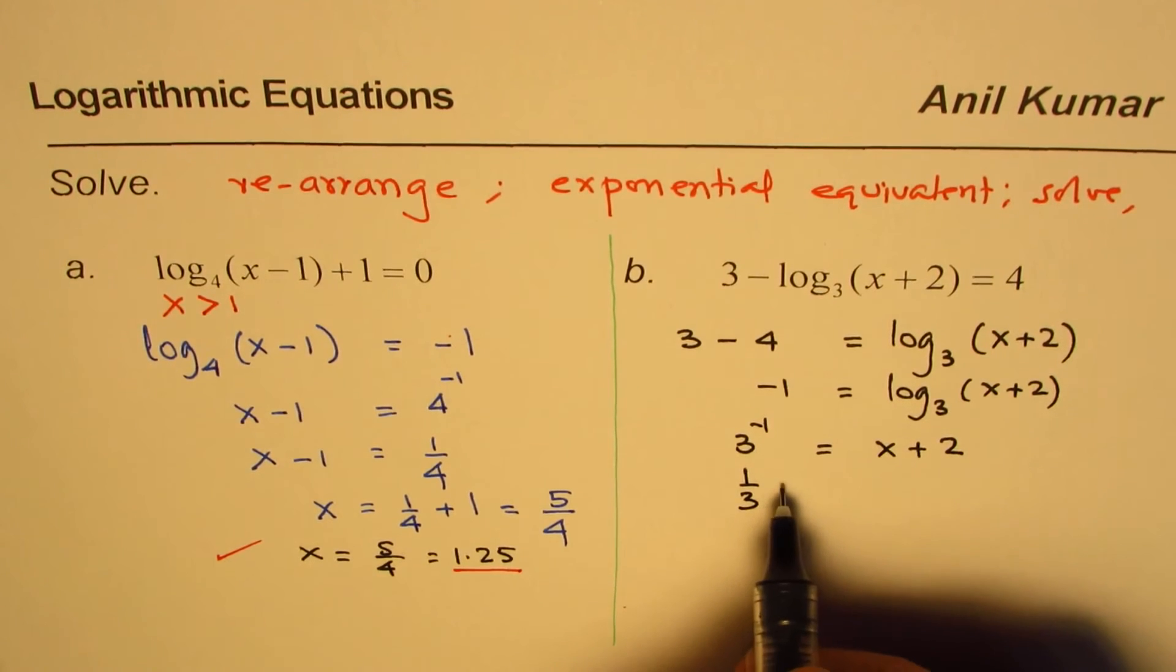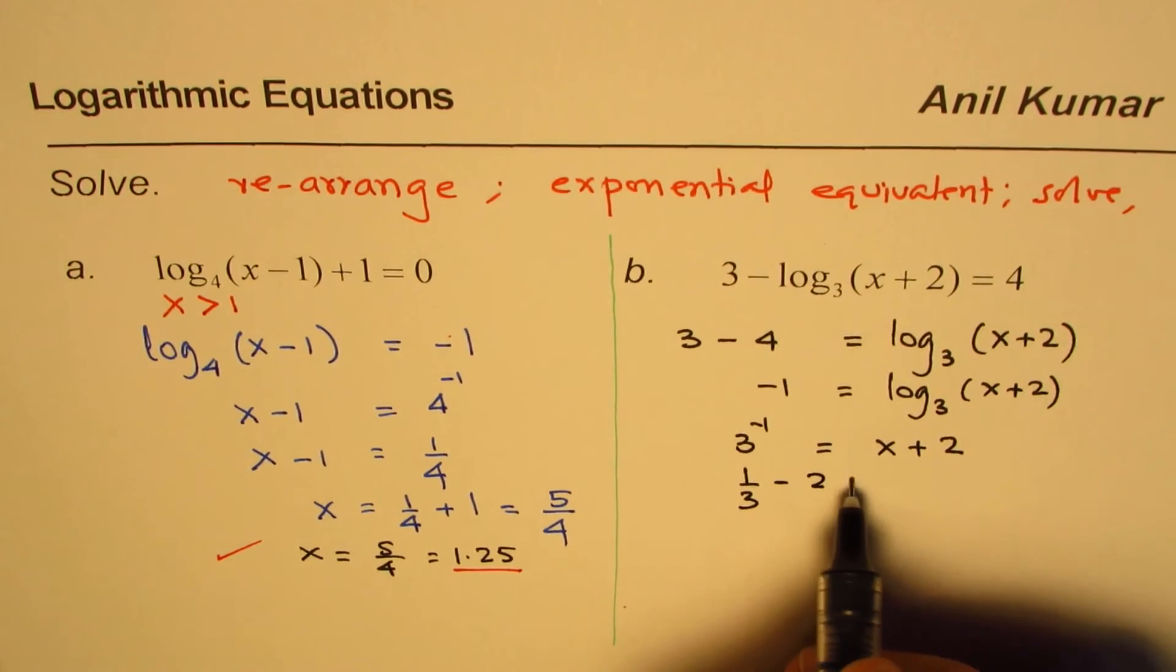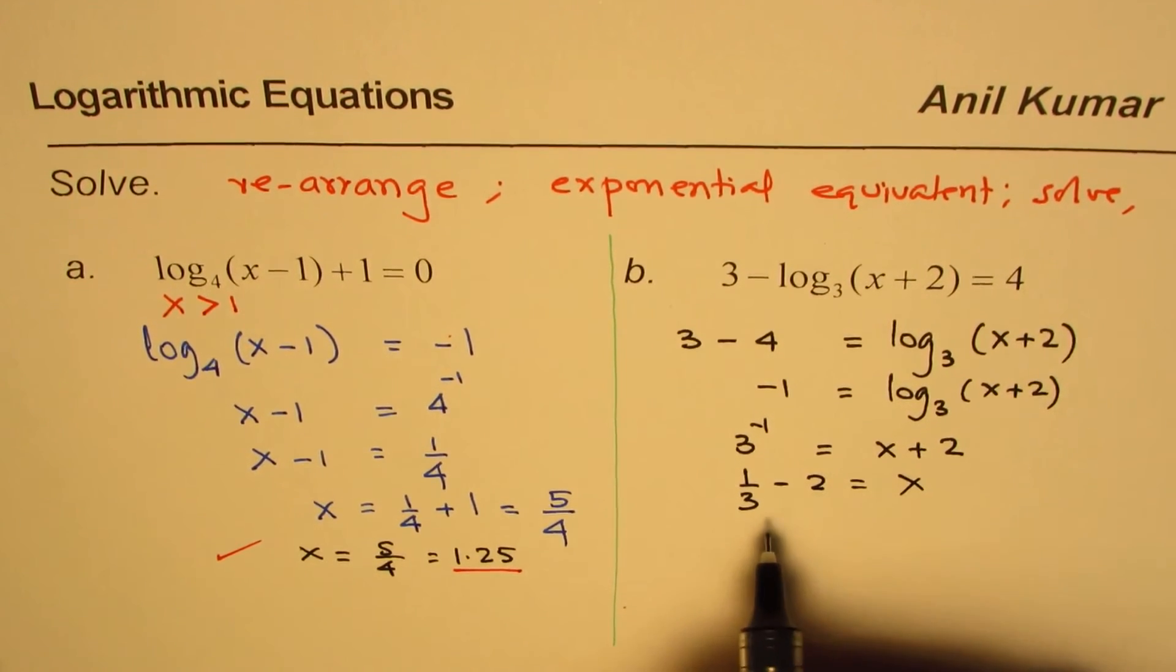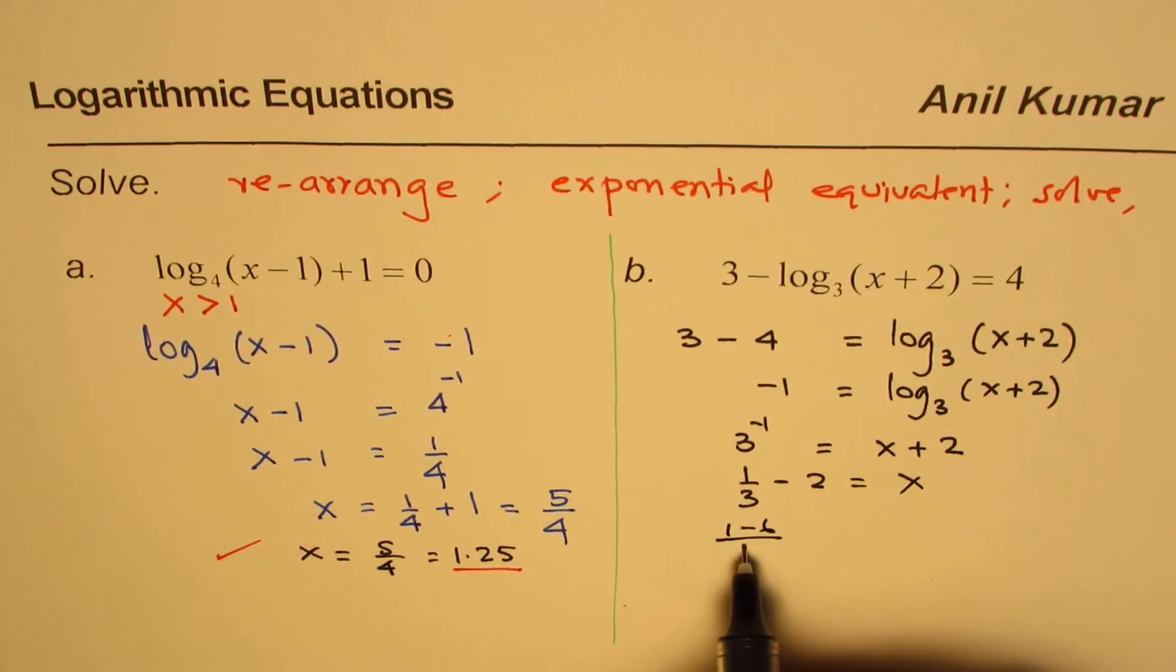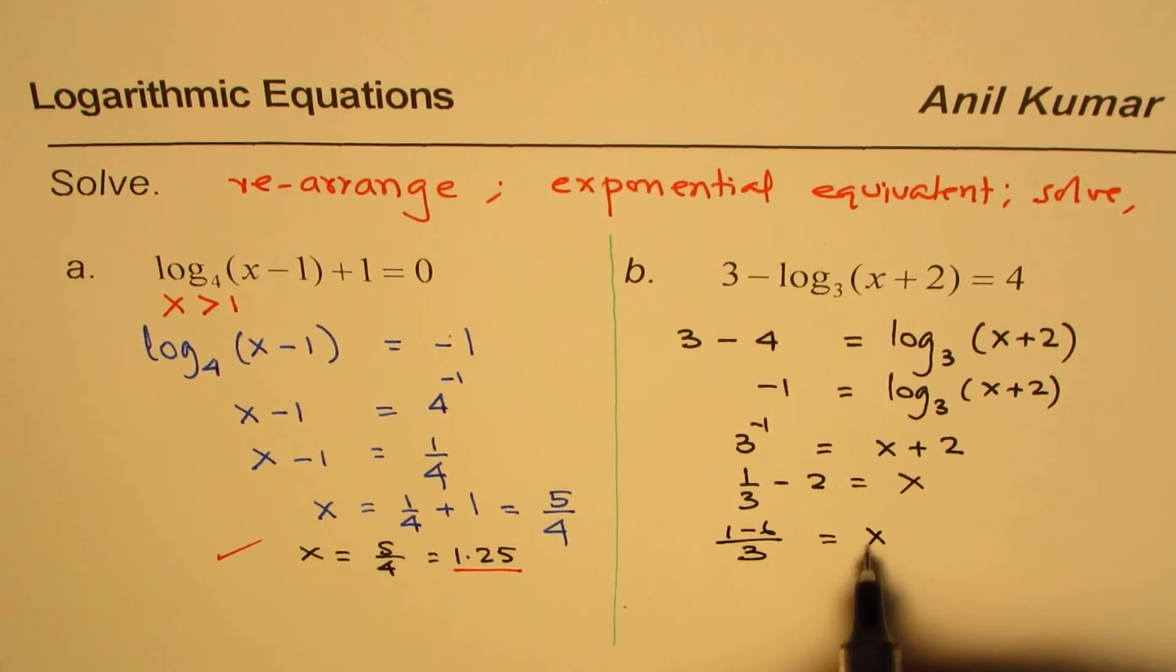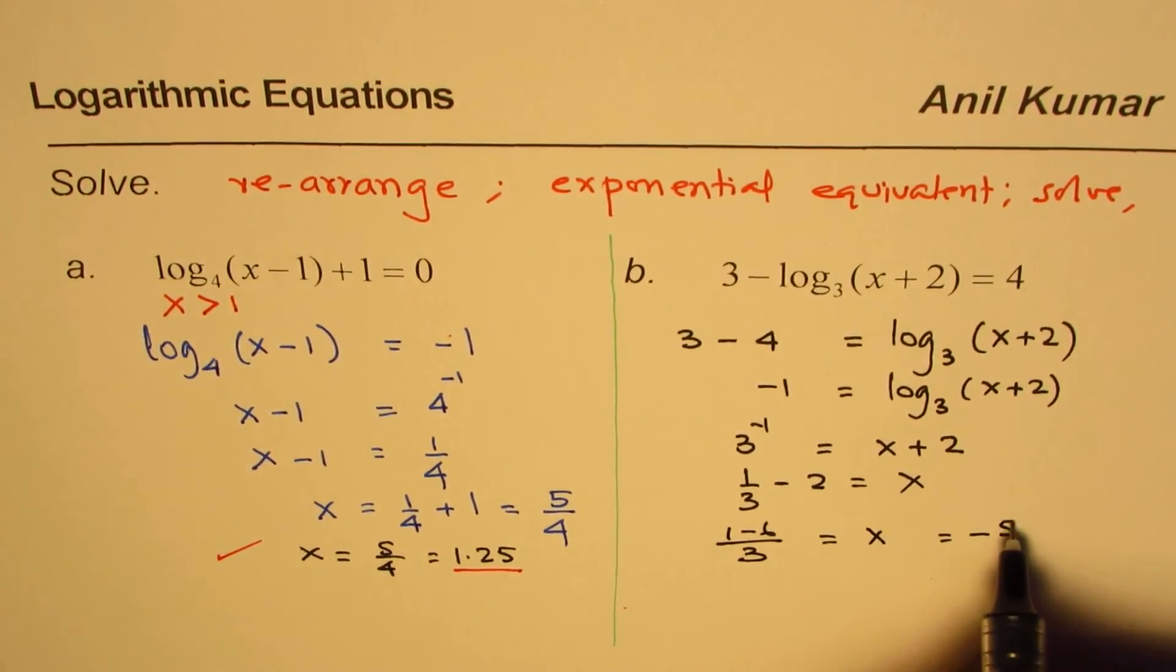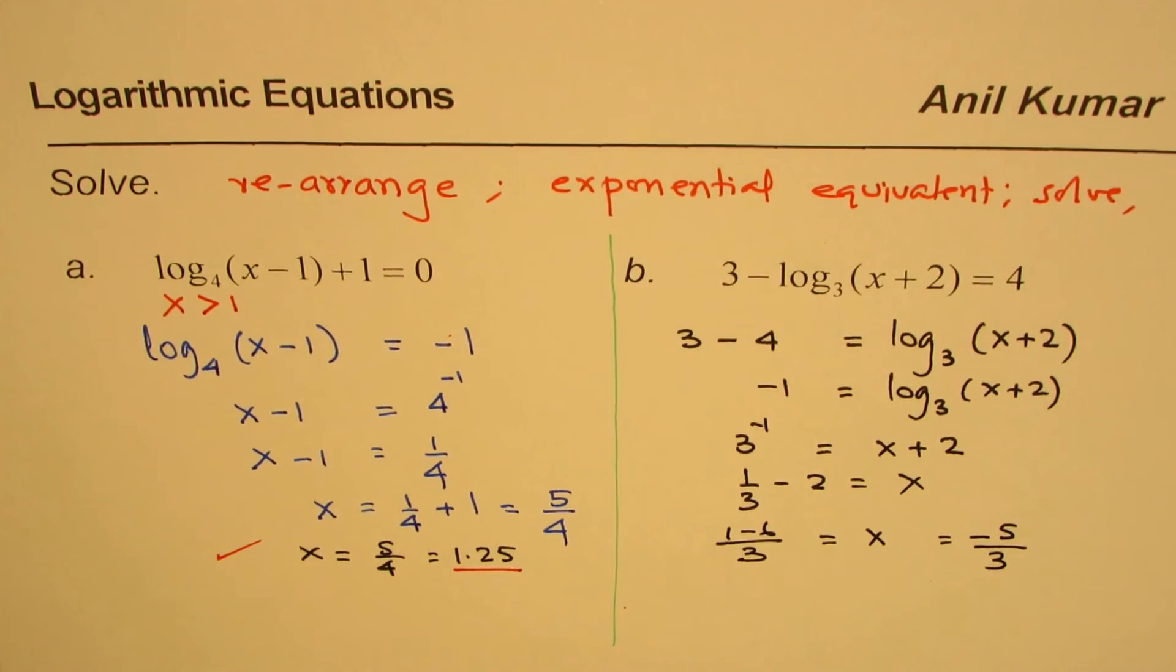And then we can bring 2 this side. So 1 over 3 minus 2 equals to x. And that should give you 1 minus 6 over 3 equals to x. And 1 minus 6 is minus 5. So what you get is minus 5 over 3 as value of x.